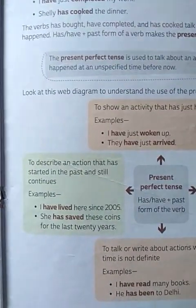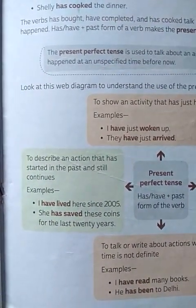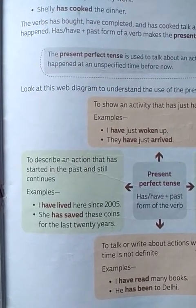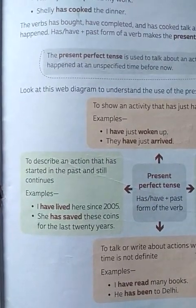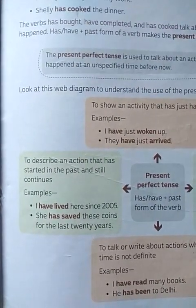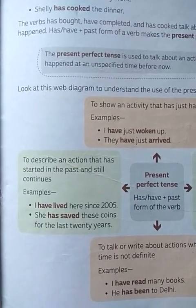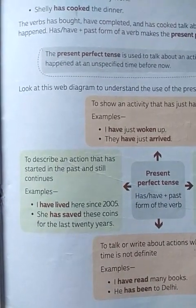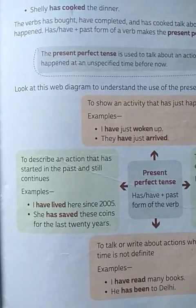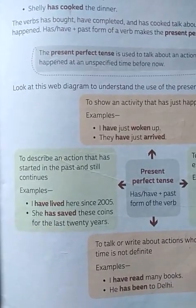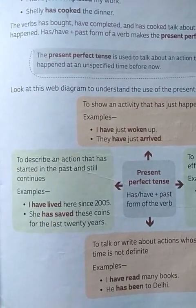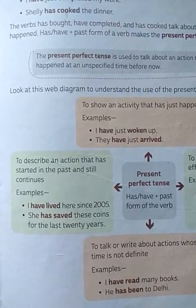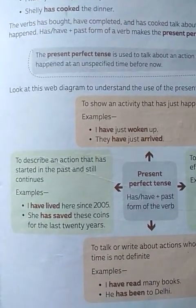To describe an action that has started in the past and still continues. Abhi dekho, kuch action hai jisko aapko describe karna hai ki woh past me shuru hua, par abhi bhi chal raha hai. Aisi bhi kai actions hoti hain jo past me shuru hoti hain par abhi bhi chal rahi hain. Example ke taur pe: I have lived here since 2005. She has saved these coins for the last 20 years.